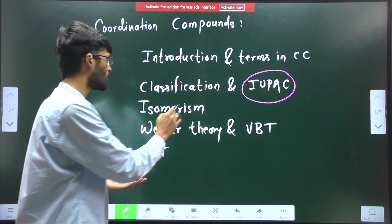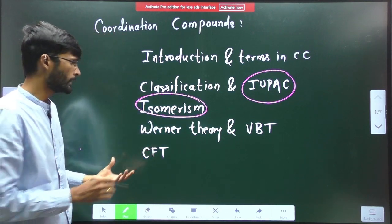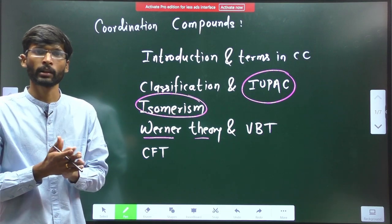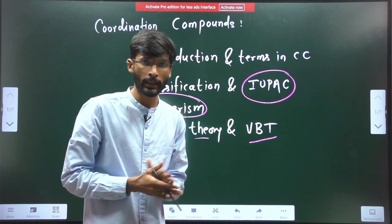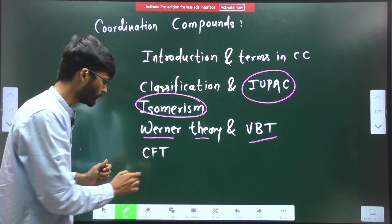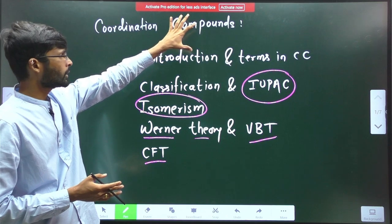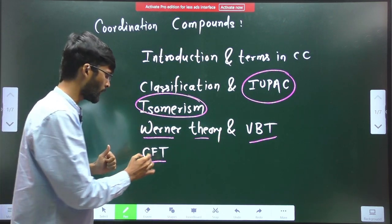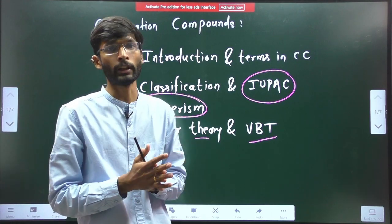One is the introduction and terms related to Coordination Compounds. Then we have classification and IUPAC nomenclature. This IUPAC nomenclature is a very important topic. Third part is related to isomerism. Fourth part is related to Werner theory. Second is VBT which is valence bond theory. And the last part is CFT. So Coordination Compound, we are going to learn in 5 different sessions. In this video, we are going to discuss about CFT.